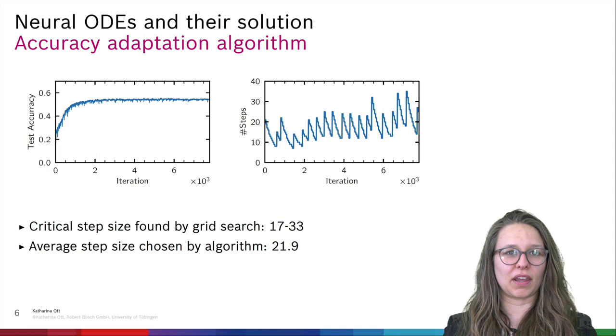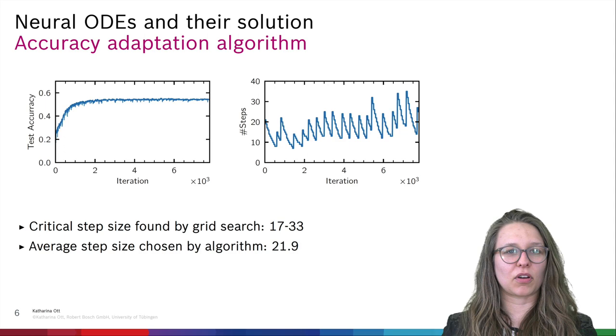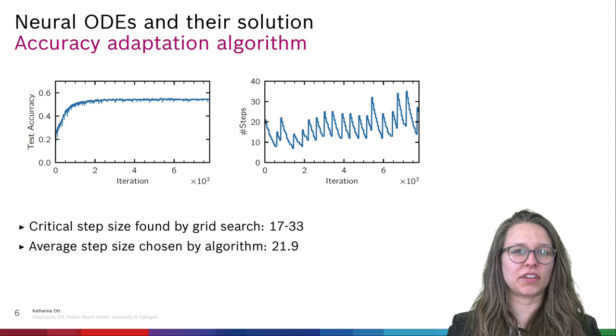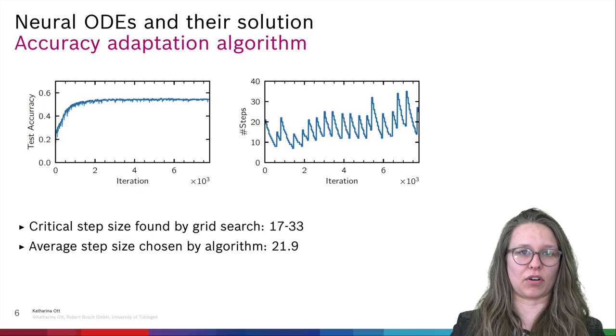In order to achieve a model which maintains the properties of ODEs through our training, we propose an algorithm which adapts the step size based on the global error. This method is different from adaptive step size methods because they also suffer from the previously described problem. You can see how the algorithm adapts the step size in the figure on the right side. This algorithm is able to choose a step size which is not prohibitively small and is close to a step size found via a grid search.